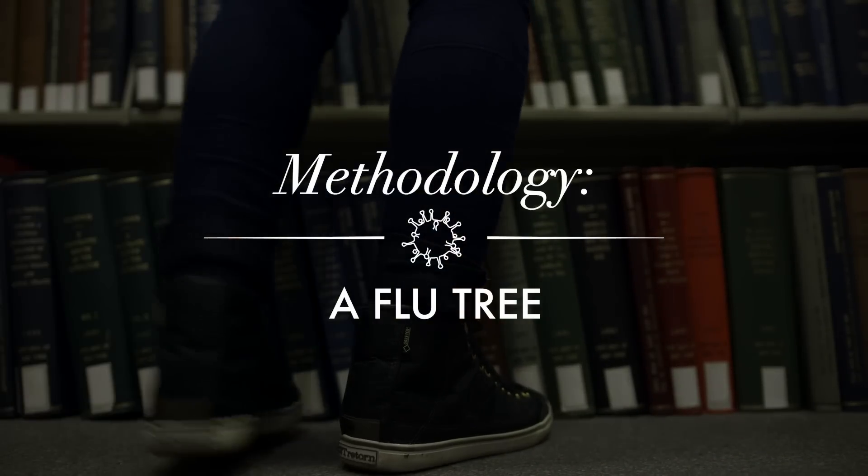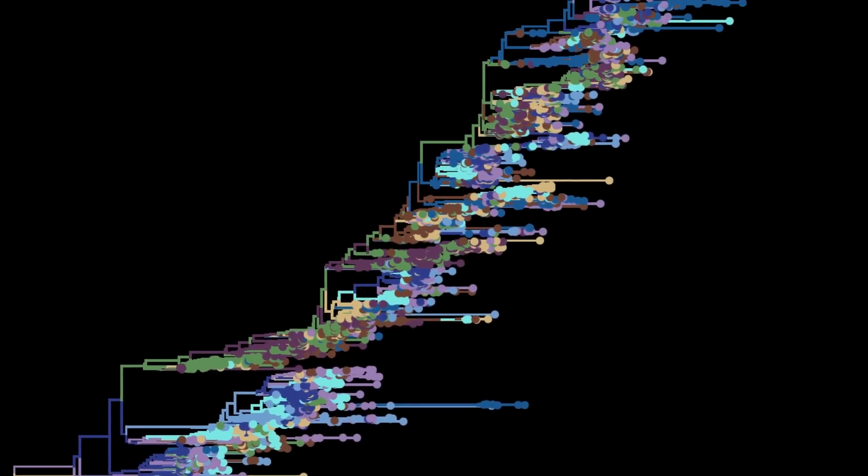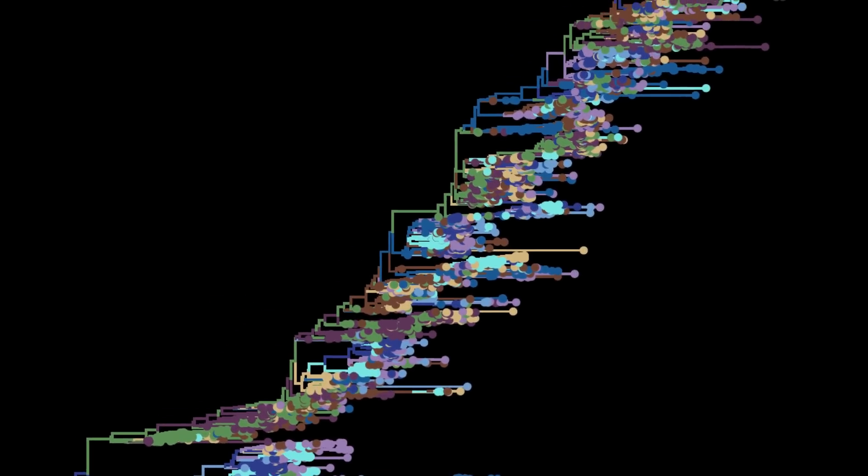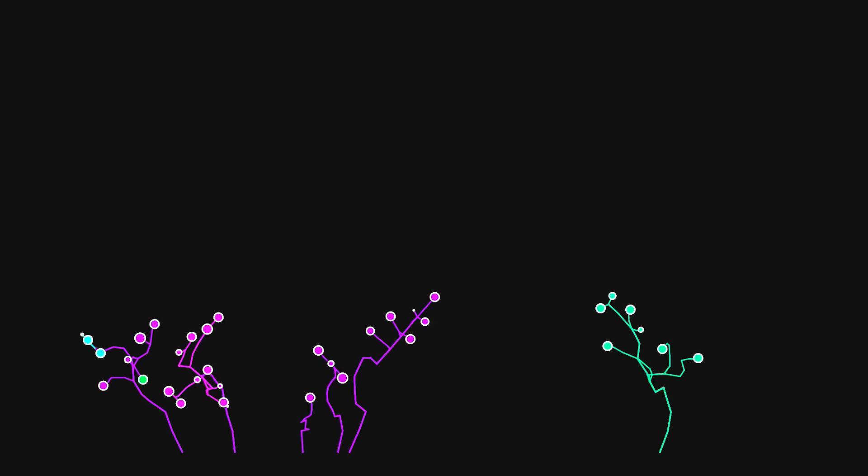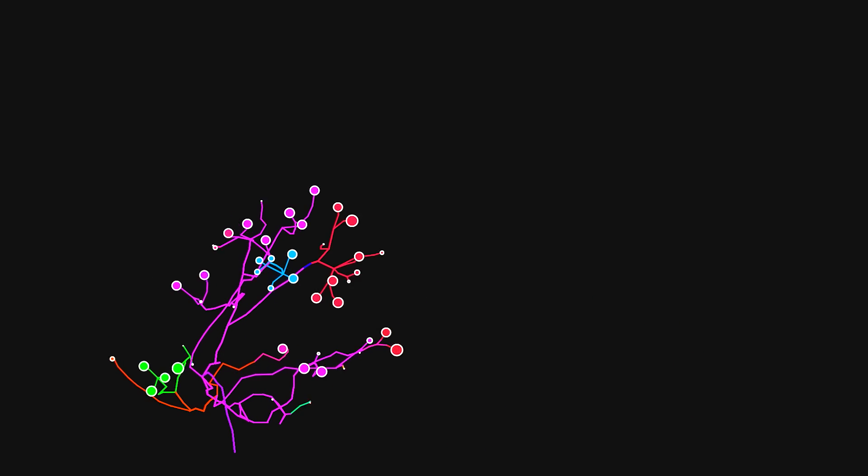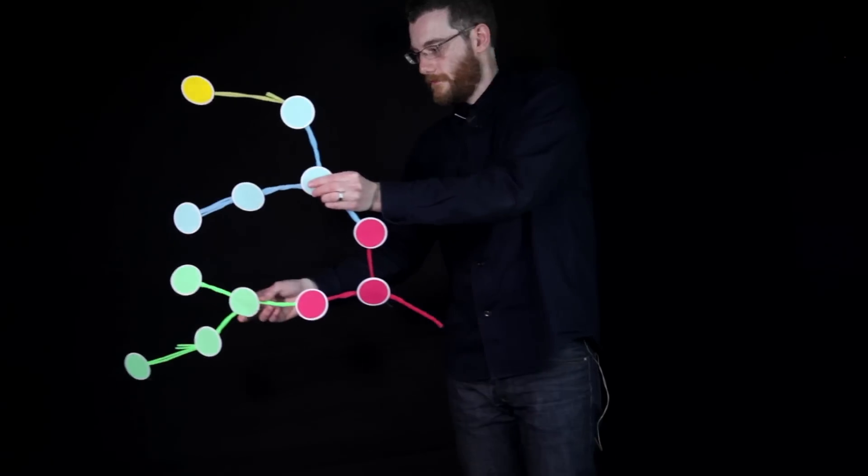Trevor compared the genetic material, the RNA of flu samples from all over the world and put together a giant family tree of flu, which Trevor agreed to recreate using paper and pipe cleaners.